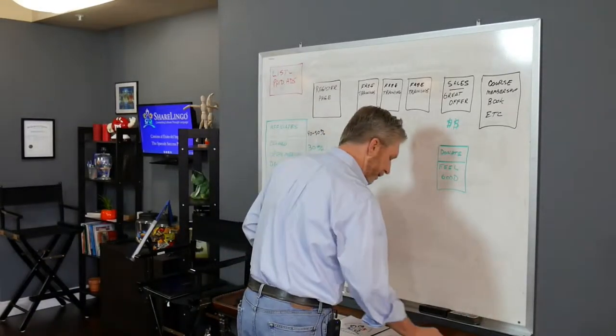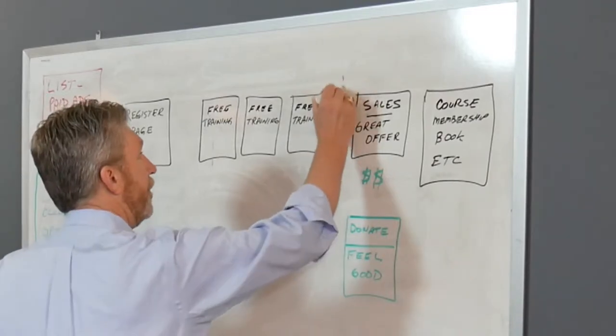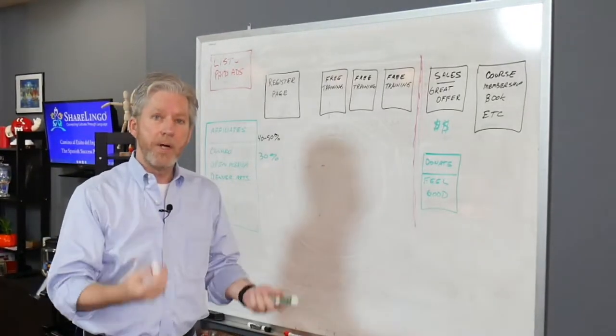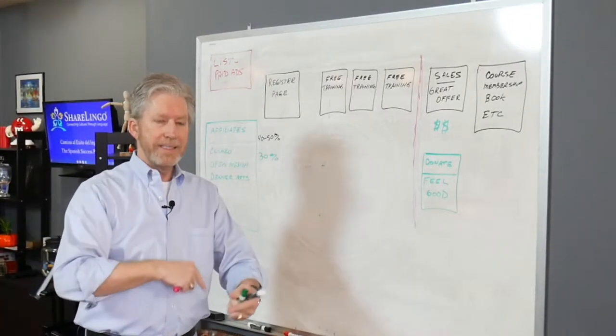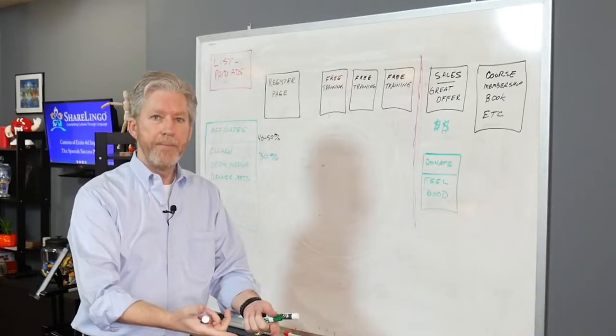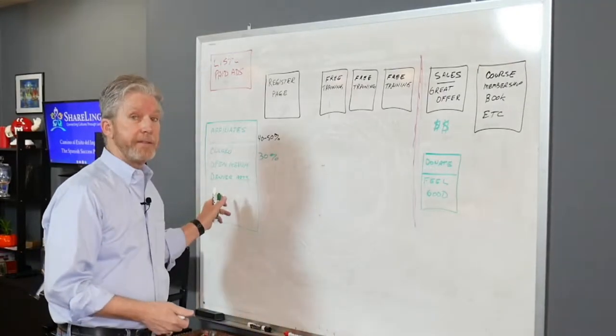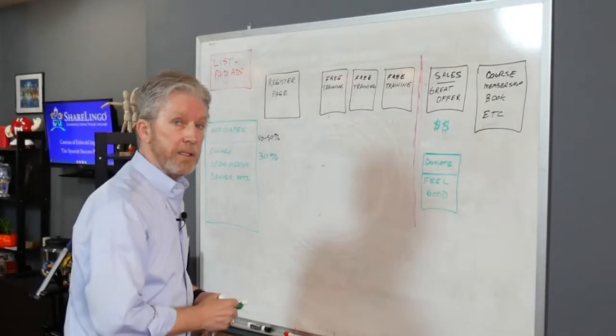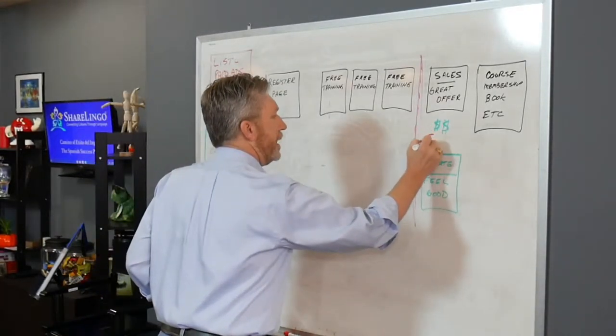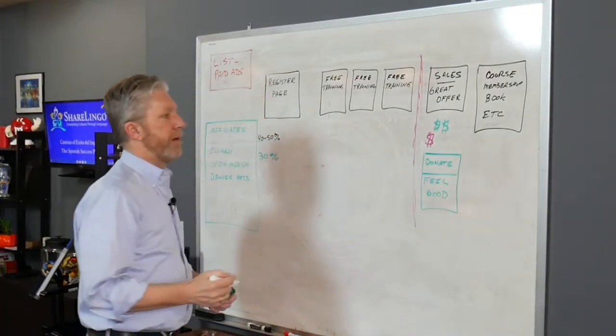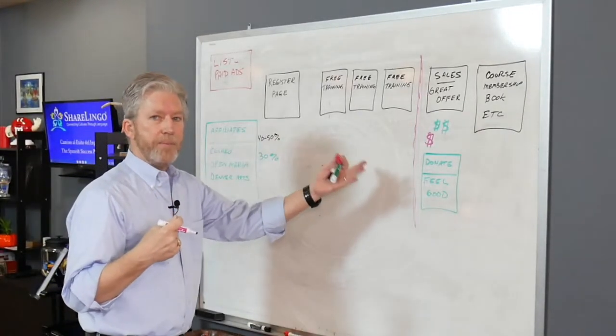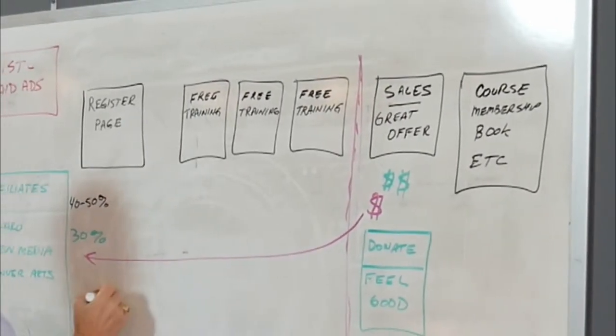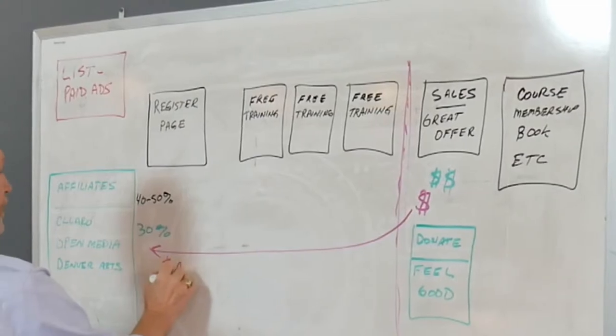Those people go into the funnel, they follow the free training. And then at the end of the free training, that's when it's our job as online marketers to transition them from the free to the paid. That's our job. That's not the nonprofit's job. That's our job as online marketers. And if we're successful, some of this money that comes in from the course or book or membership that we're selling is going to go automatically back to the nonprofit in the form of an affiliate fee.